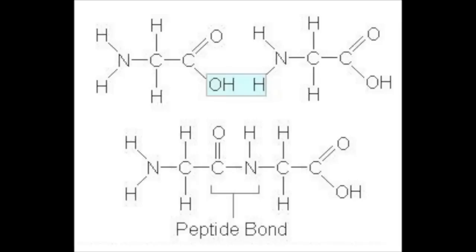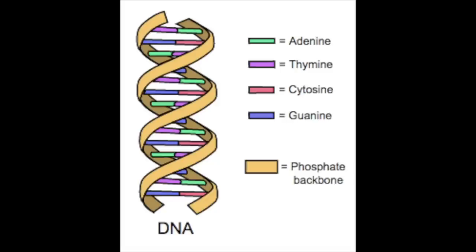Amino acids can form peptide bonds in a condensation reaction — a water molecule is lost, and the bond forms between a carbon and a nitrogen atom. DNA is a double helix found inside cells, responsible for coding for proteins and our features. It is made up of nucleotides, each consisting of a sugar, phosphate, and a base (A, T, C, or G). Base pairing rules: A bonds to T and C bonds to G.